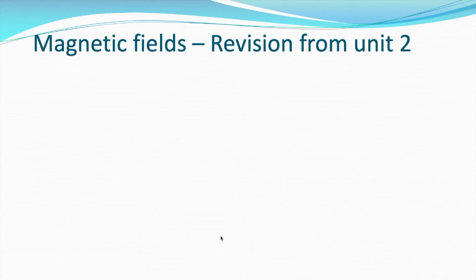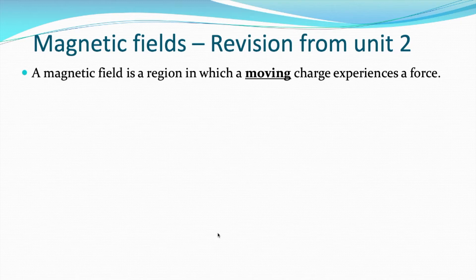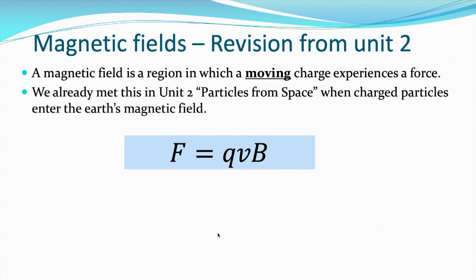We've already met magnetic fields before. A magnetic field is a region in which a moving charge experiences a force, and the emphasis there is on the word moving — it has to have a velocity for it to experience a force. We already met this in Unit 2, particles from space, when charged particles enter the Earth's magnetic field, maybe from the solar wind or from cosmic radiation. The force on a moving charged particle in a magnetic field is equal to Q (the charge), V (its velocity), and B is the magnetic induction, or the size of the magnetic field.